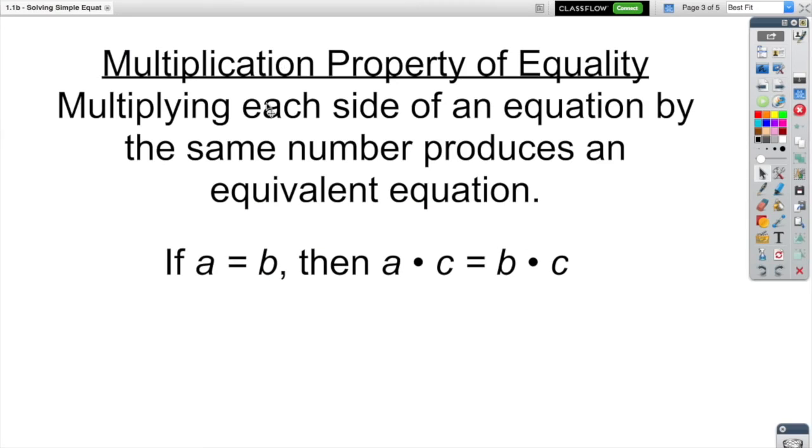The multiplication property of equality says that as long as we multiply each side of an equation by the same number, it produces an equivalent equation. So for example, if our initial balance scale was A equals B, then I could multiply both sides by C, and things would stay balanced.